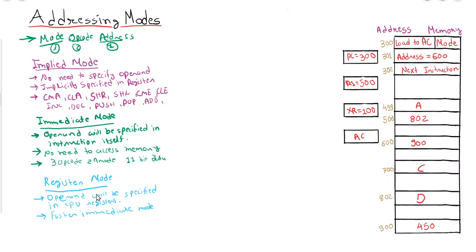In register mode, whatever value is specified inside the register is treated as the value of the operand. Next is register indirect mode.